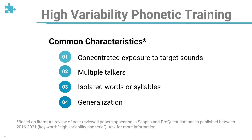HVPT concentrates exposure to target speech sounds by providing multiple recordings from multiple talkers. Instead of hearing one person say 'bet,' you'll hear several people saying it. The listening materials are often constrained to isolated words and syllables, such as B-vowel-T — things like bet, boot, beat, etc. — or simple syllables like be, ba, bada. No context, just sounds.